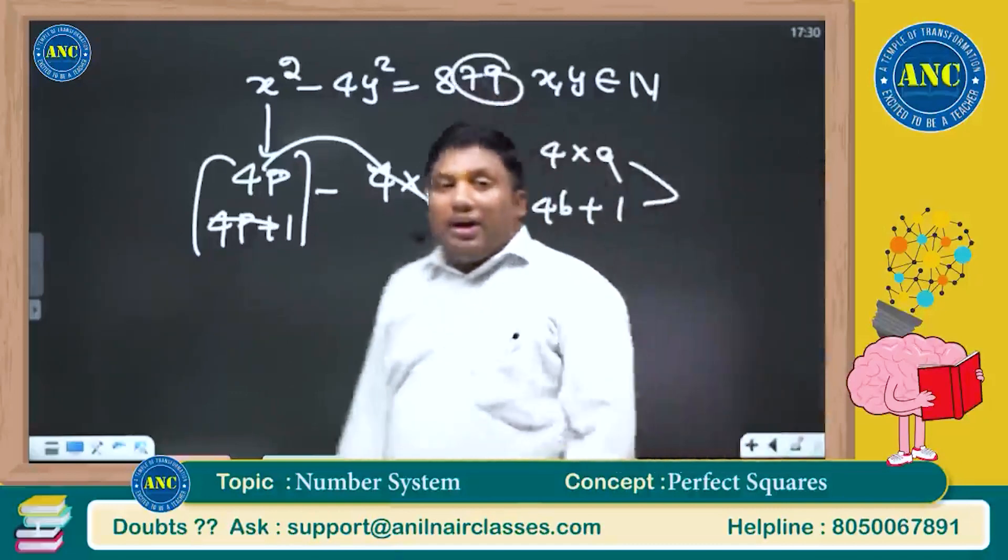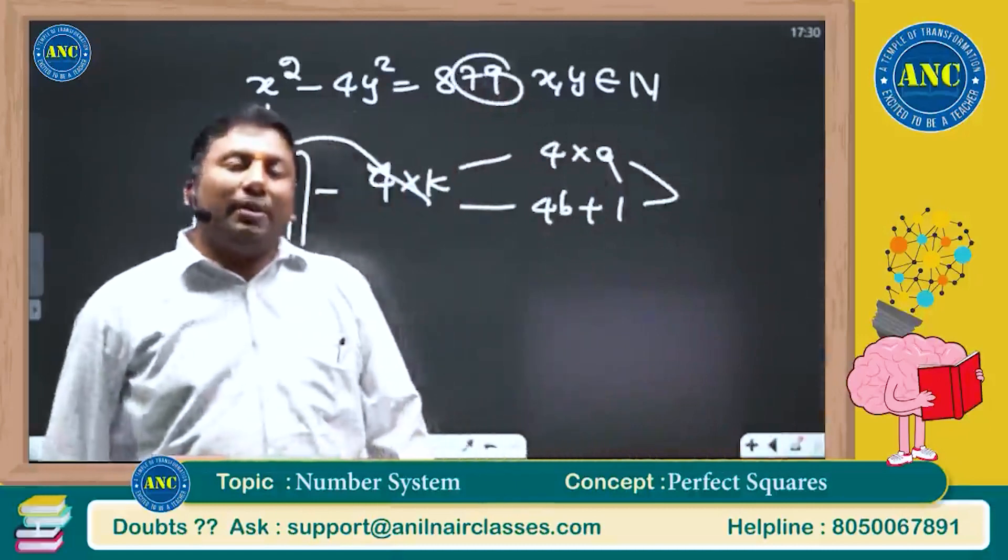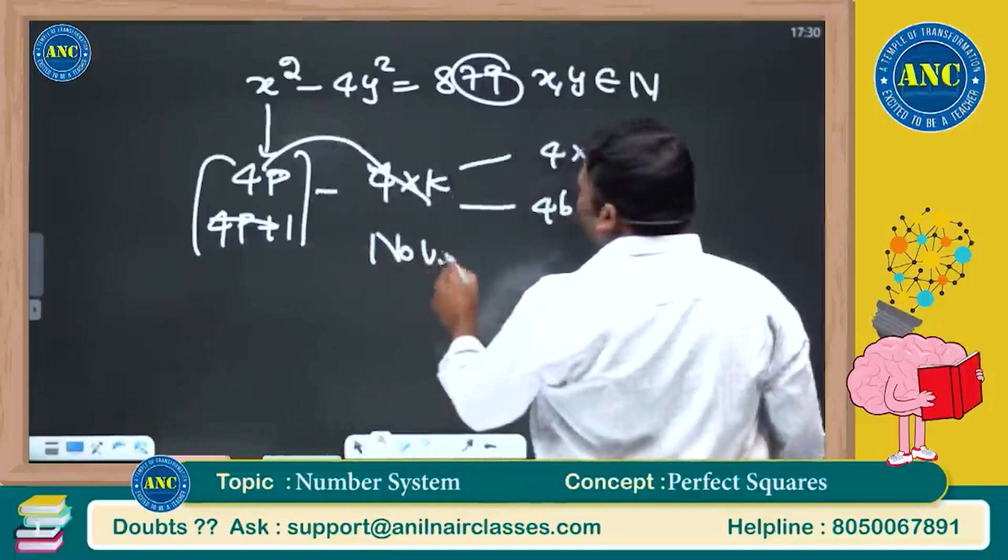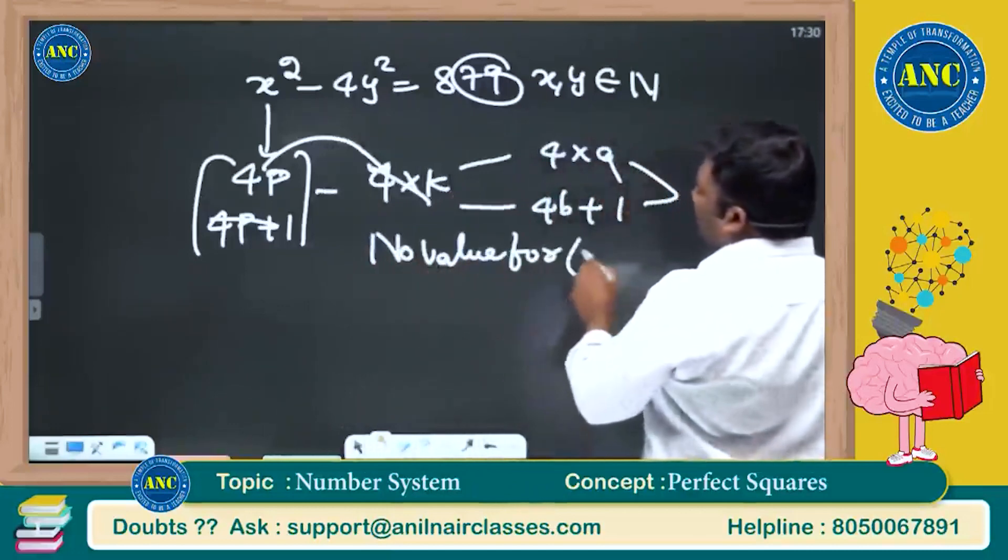879: 4 into 219 plus 3. 4k plus 3 form does not arise. What is the answer for this question? No value for x comma y exists.